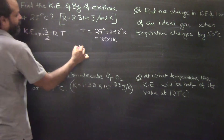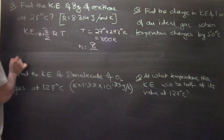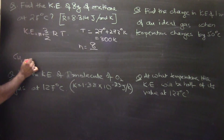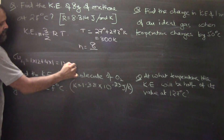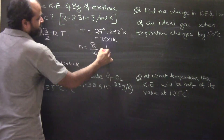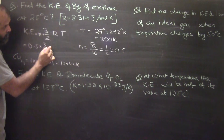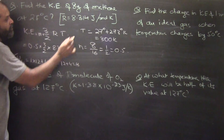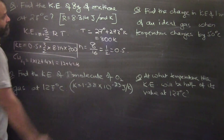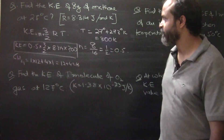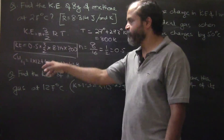R, the value is given. N — how will you calculate the number of moles? The number of moles will be: 8 gram of methane, and methane is CH4. So we have C as 1 into 12 plus 4 into 1, which is 12 plus 4, that is 16. So number of moles will be 8 by 16, that is 1 by 2, that is 0.5. So this will be equal to 0.5 into 3 by 2 into 8.314 into 300. This is the kinetic energy of 8 gram of methane. You can calculate the same.